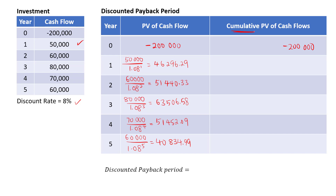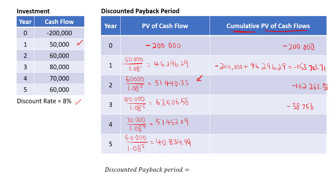We still need to calculate the cumulative amount, but now it will be based on the present value of the cash flows. In year one, we take negative $200,000 plus $46,296.29, giving negative $153,703.71. In year two, we add $51,440.33, giving negative $102,263.38. For year three, we add $63,506.58, giving negative $38,756.80.